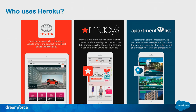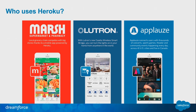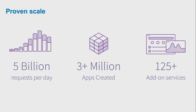Applications large and small use Heroku. Macy's is one. Toyota Europe — if you buy a car in Europe, you're using a Heroku application as you configure the color, trim, and paint options. Apartment List helps you find out how depressingly expensive it is to live in San Francisco. Internet of Things is another popular use — Lutron makes lights and heaters, and their app's back end runs on Heroku. Heroku has proven scale — we're the largest platform as a service on the planet, and we handle over five billion requests per day.